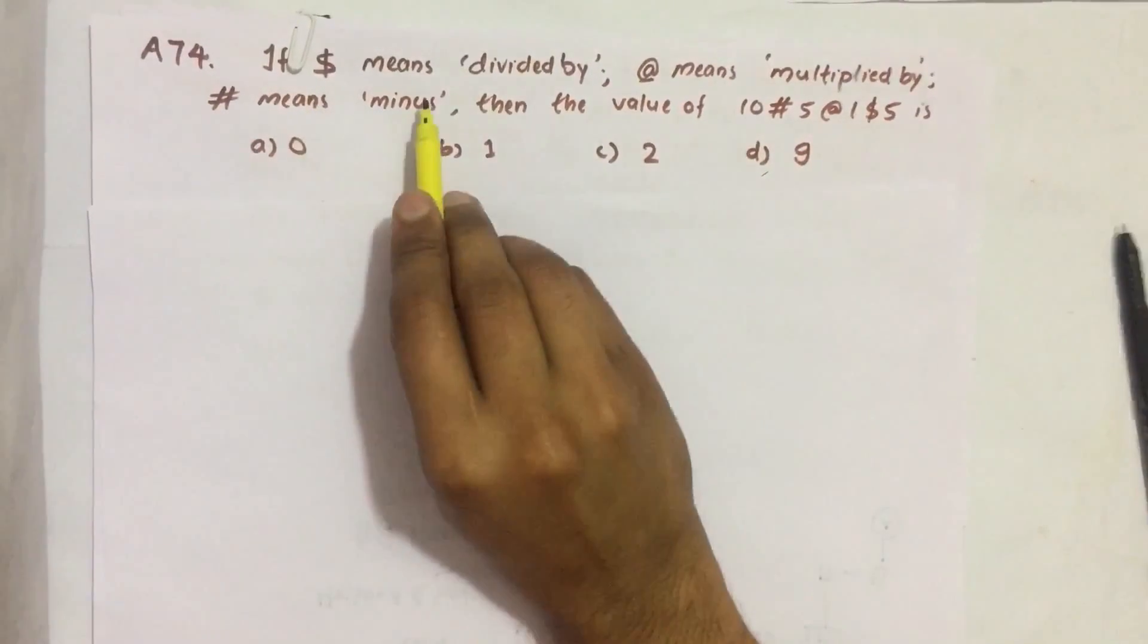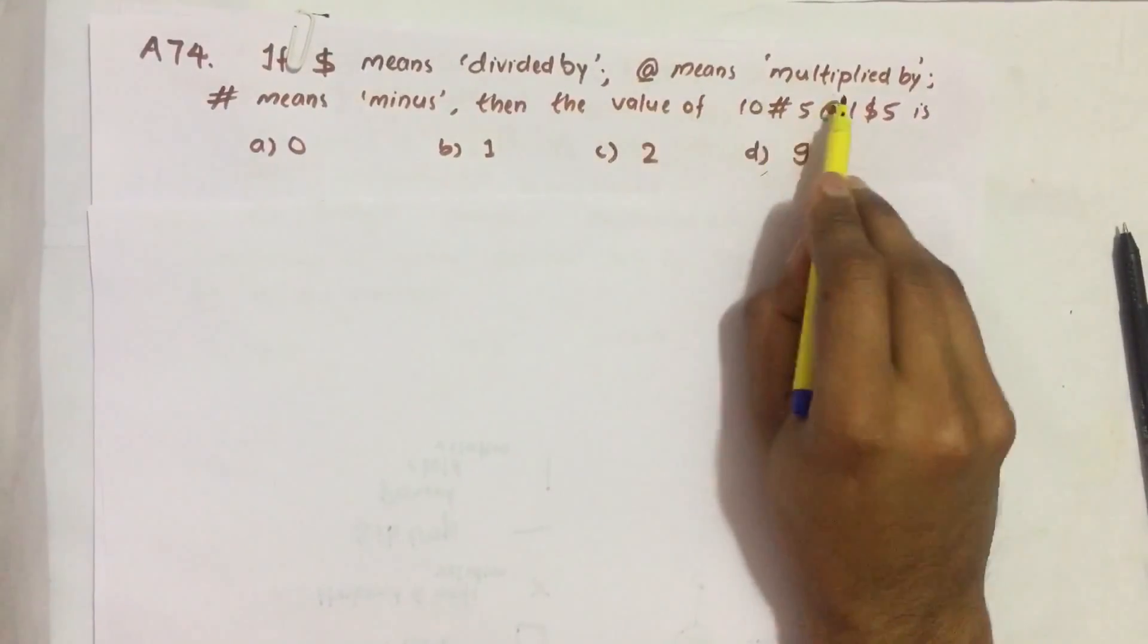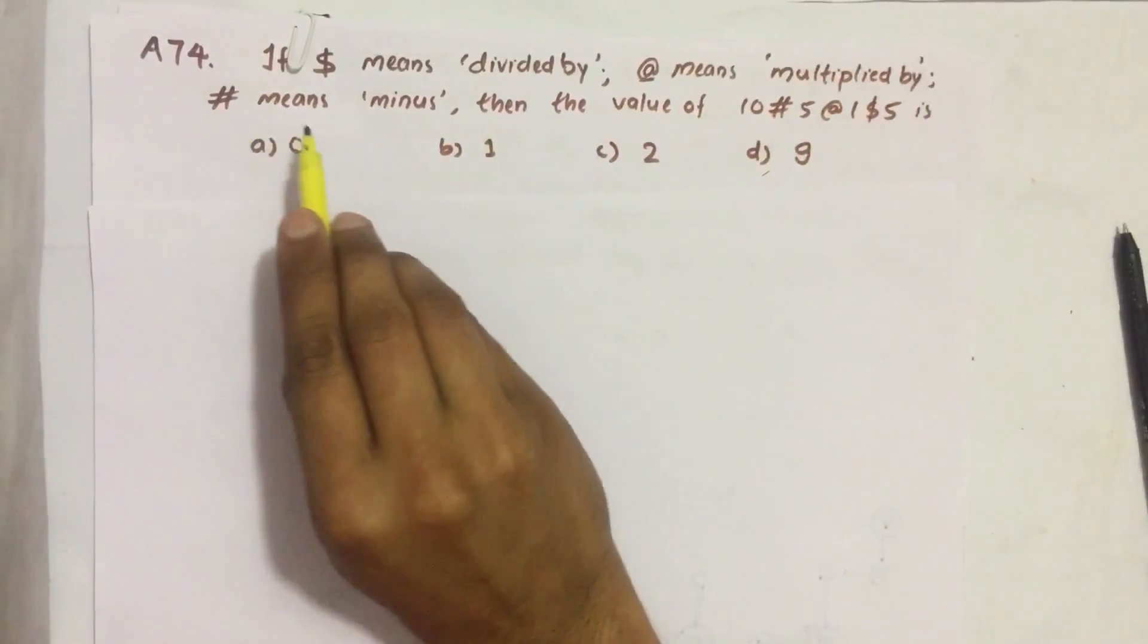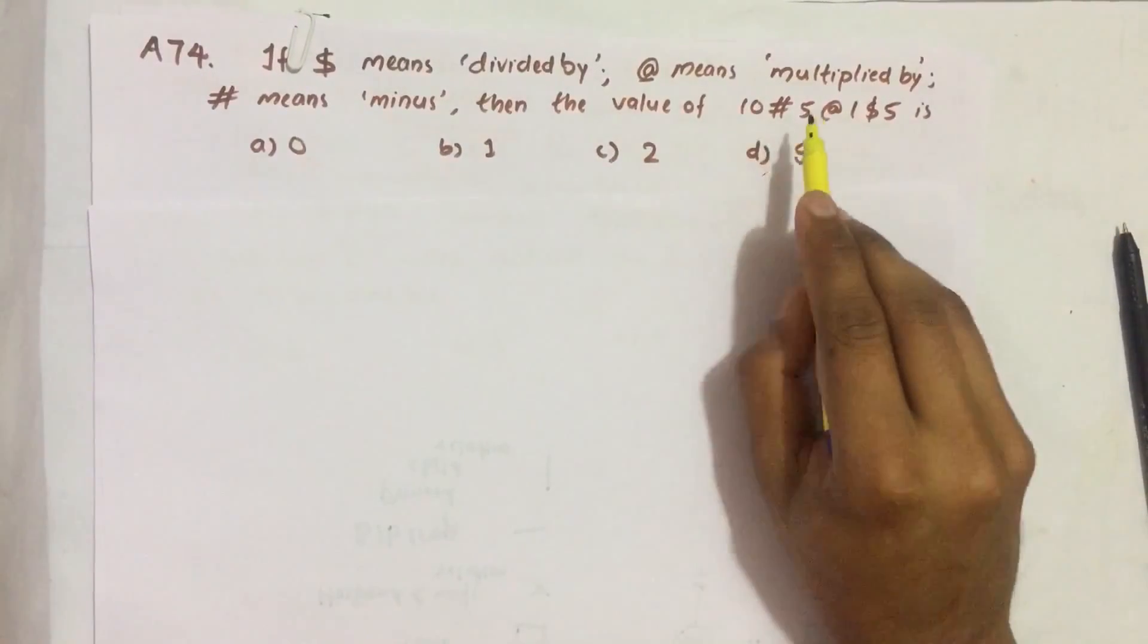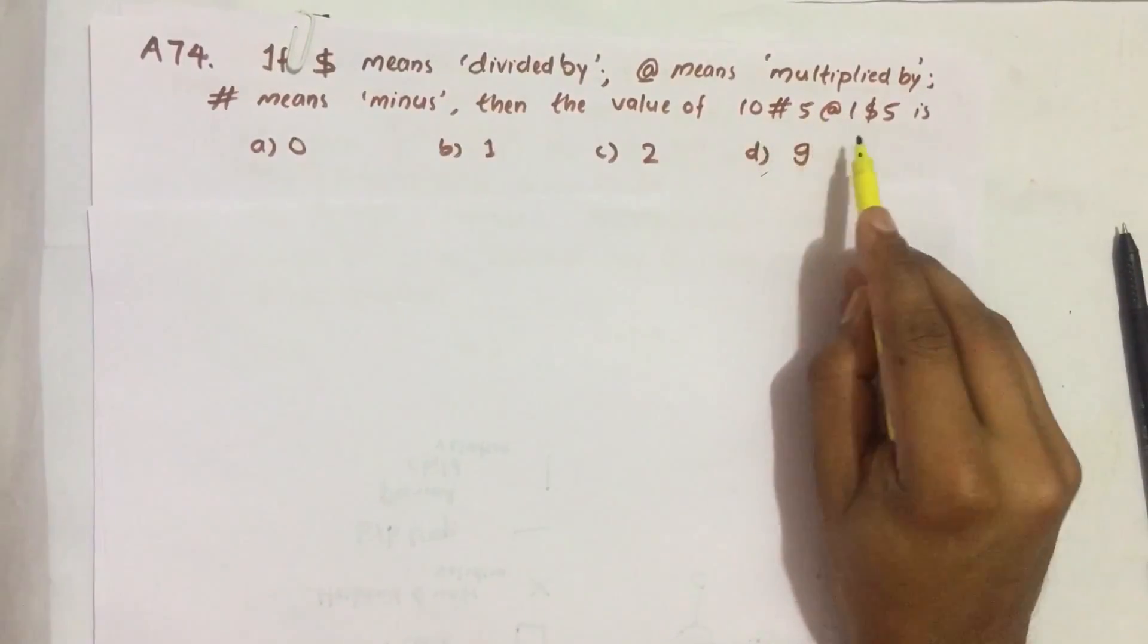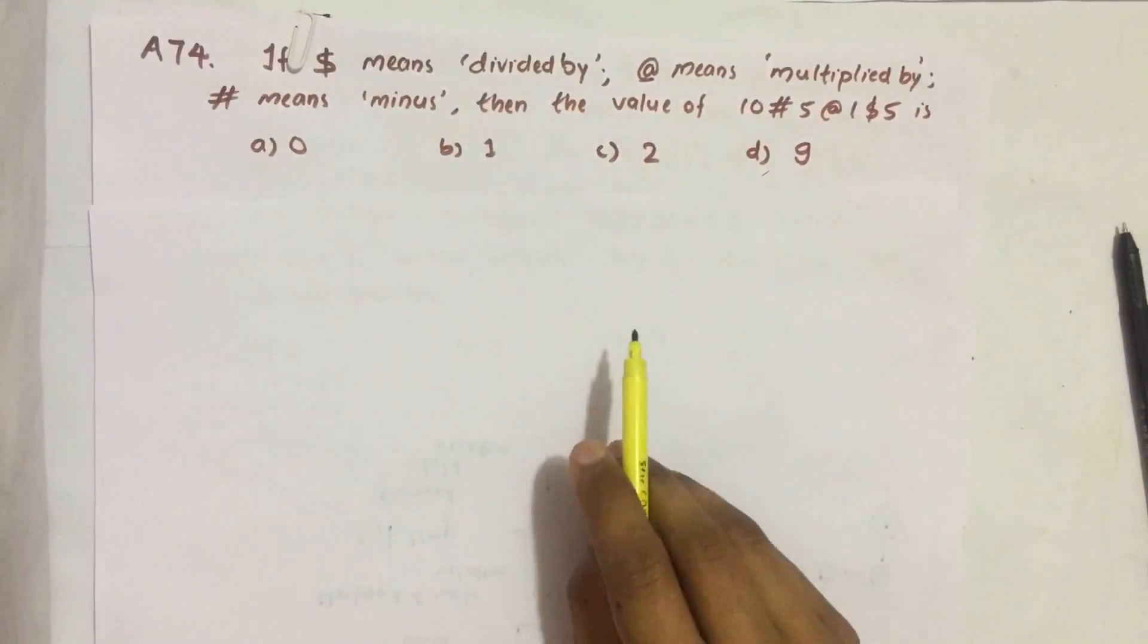If dollar sign means divided by, at sign means multiplied by, hash sign means minus, then value of 10 hash 5 at 1 dollar 5 is what?